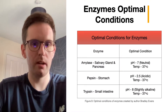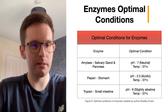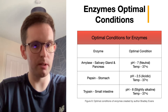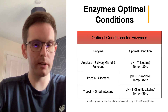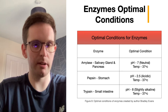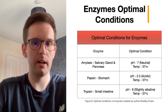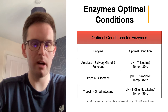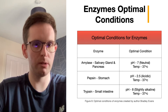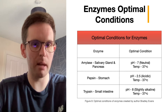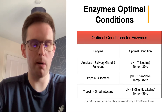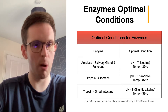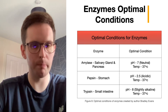What are enzymes? An enzyme is a substance that catalyses chemical reactions in living organisms without itself being altered. We'll look at three different enzymes and their optimal conditions. Amylase is found in the saliva and is a carbohydrate enzyme that breaks down starch into simple sugars like maltose. Amylase can be found throughout the alimentary canal and has an optimum temperature of 37 degrees and an optimum pH level of 7, making it neutral.